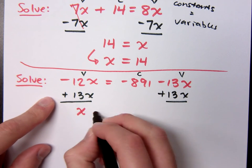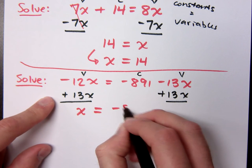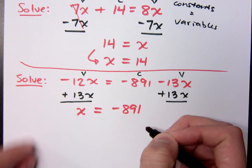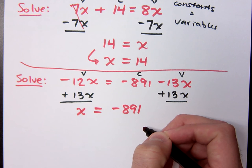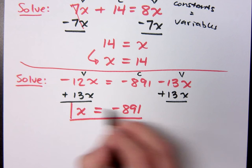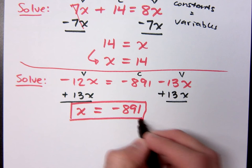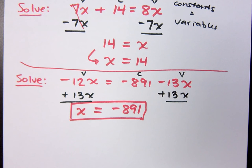So here I have negative 12x plus 13x is what? X. X equals what? Negative 891. Negative 891. Is that cool? X is totally by itself. It's a plain positive 1x, and that's all that I'm ever requiring of you to do is to get just a plain x by itself.